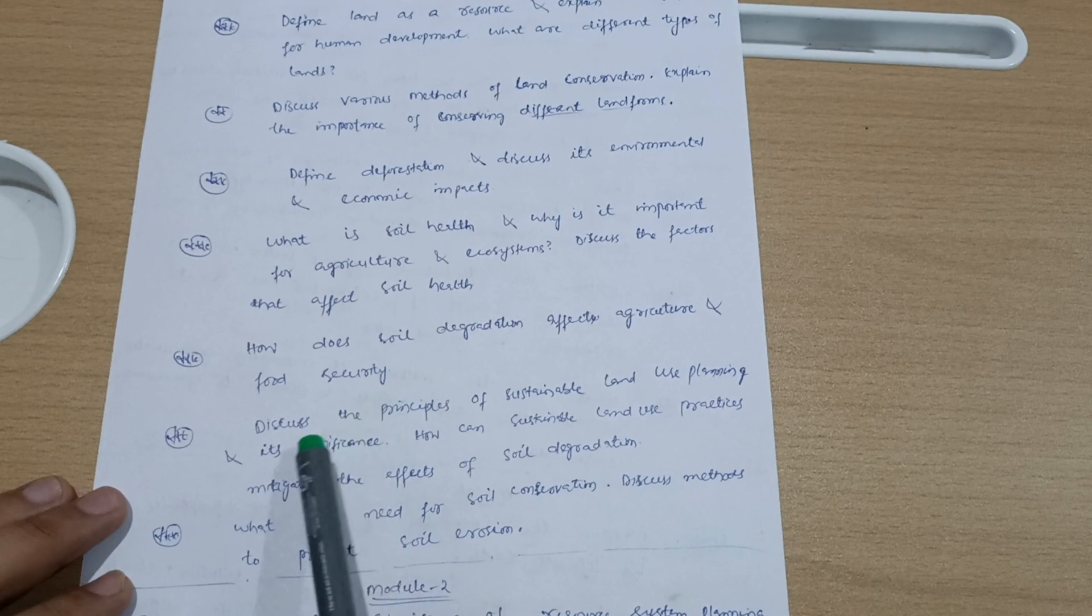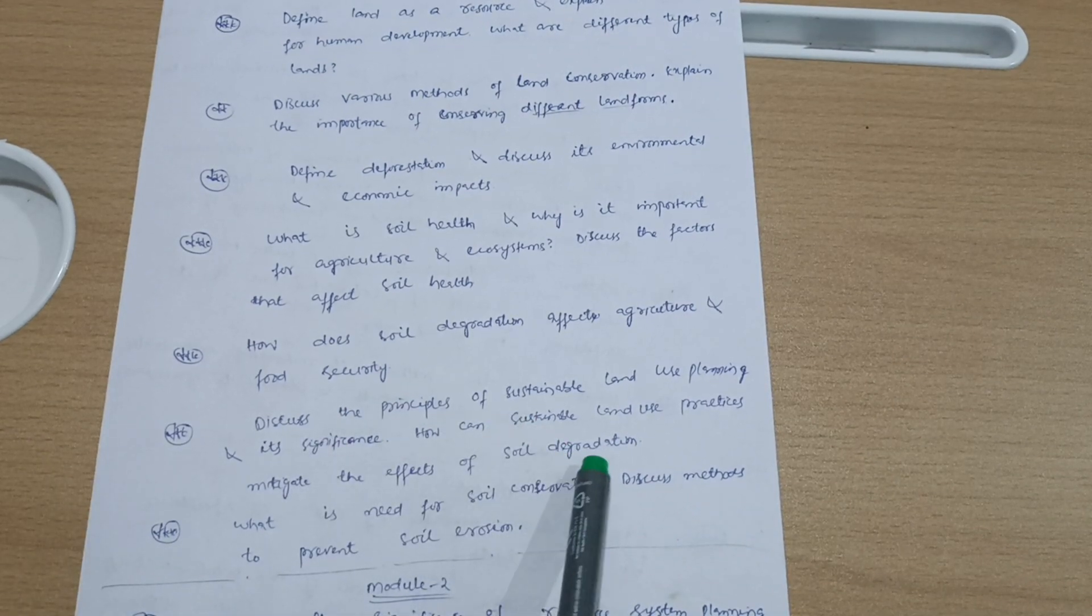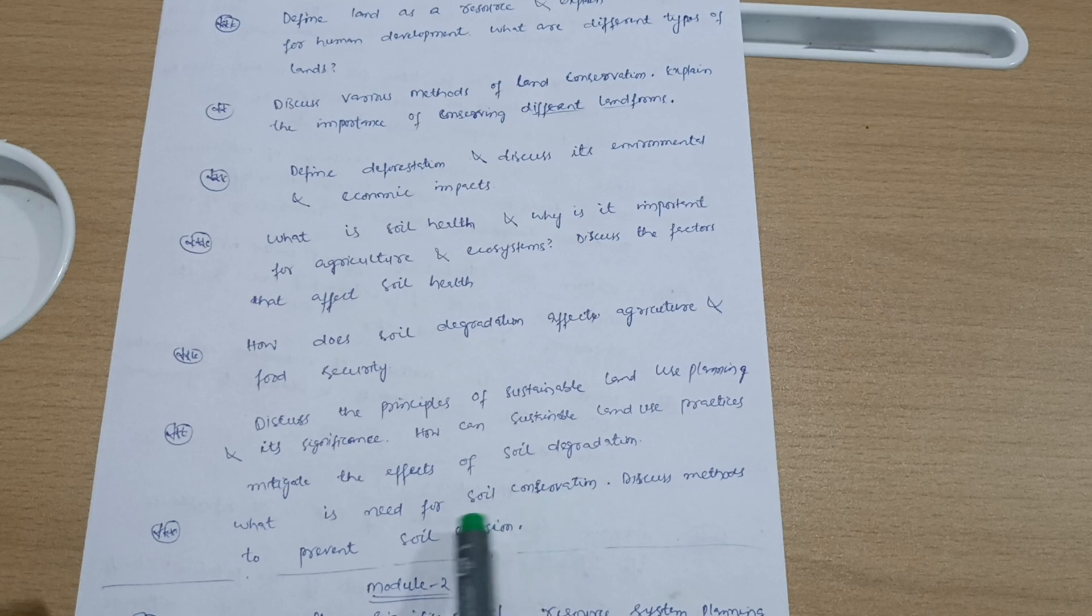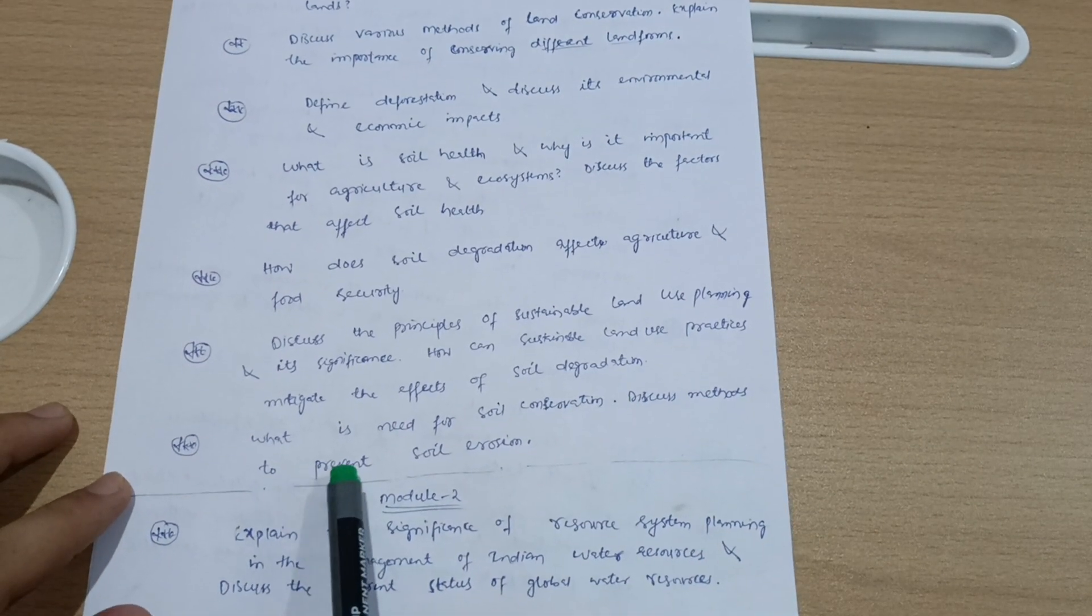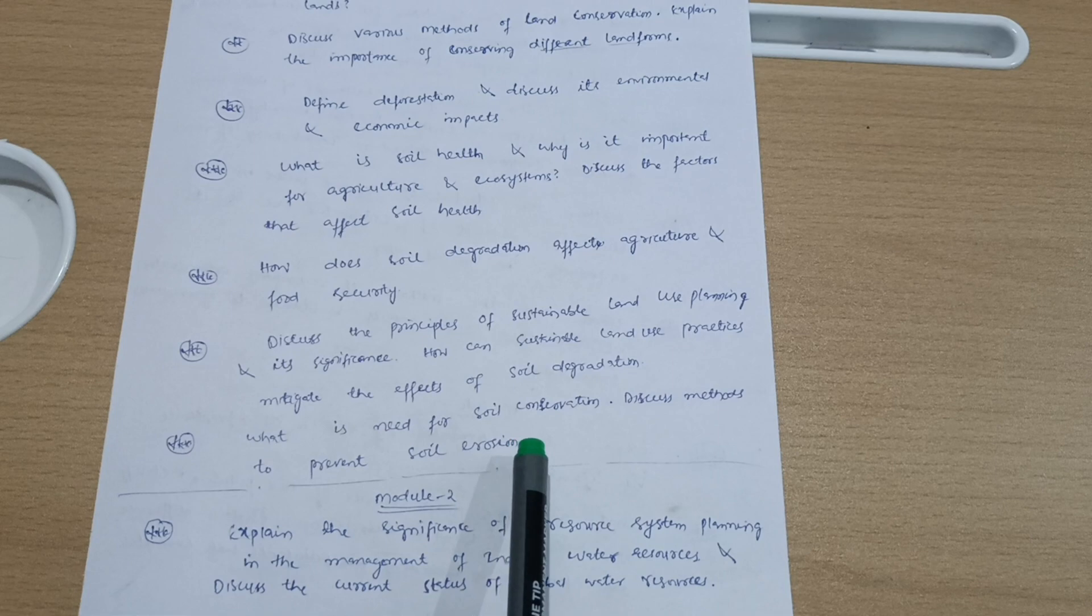How does soil degradation affect agriculture and food security? Discuss the principles of sustainable land use planning and its significance. How can sustainable land use practices mitigate the effects of soil degradation? Last question from Module 1: What is the need for soil conservation? Discuss methods to prevent soil erosion.